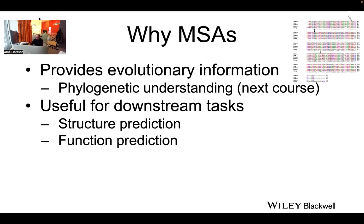Structure prediction uses what's called AlphaFold, and it's based on the idea that there are correlations between different positions in the multiple sequence alignment. MSAs are also useful for function prediction — if a position in the multiple sequence alignment is always conserved, that has a functional reason. Evolution has conserved it for some reason, and that gives clues about the function of that residue.